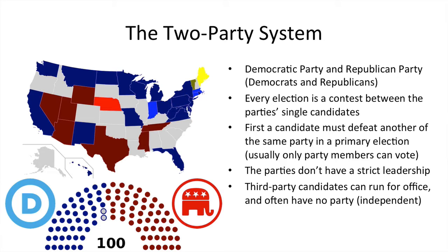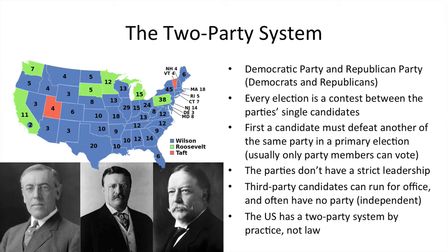The U.S. has a two-party system by practice, not by law. This is from the 1912 presidential election, where Theodore Roosevelt, a former president, ran on a third-party ticket with his own party and came in second. So there's nothing against other political parties gaining ground — it's just very, very difficult.